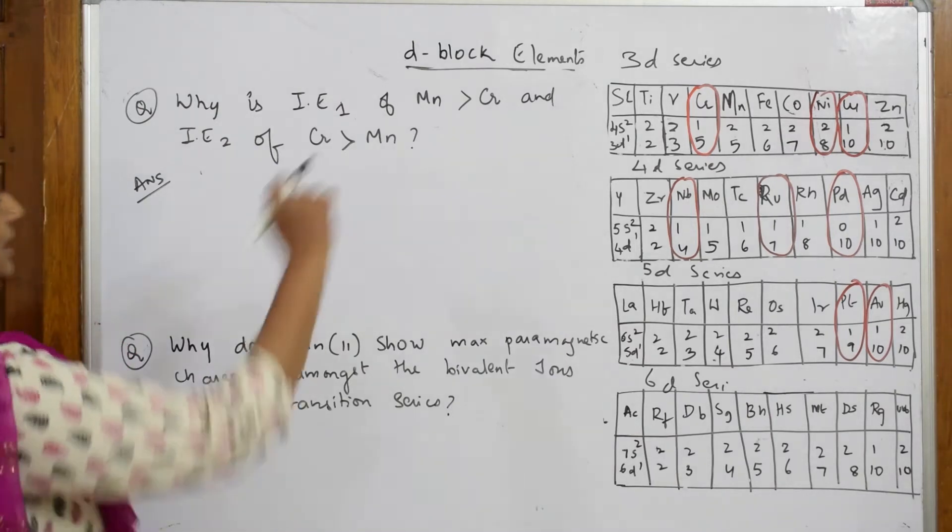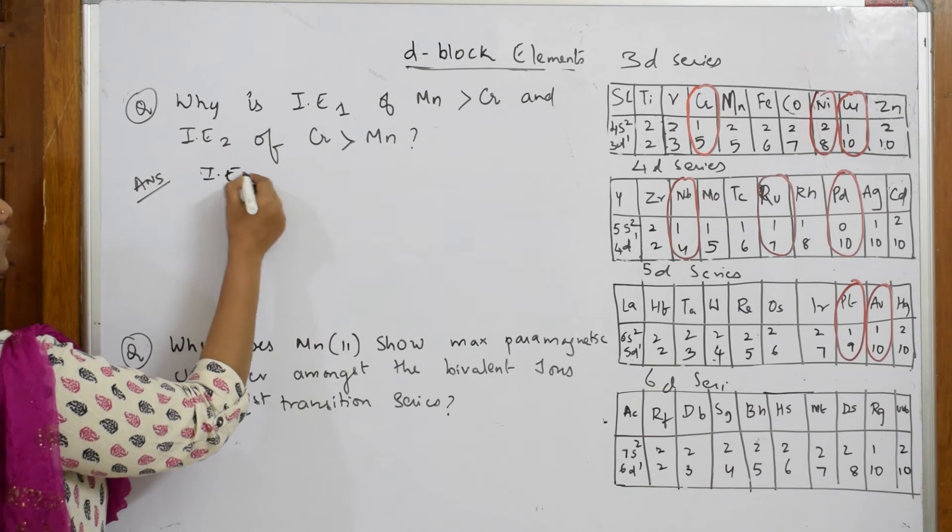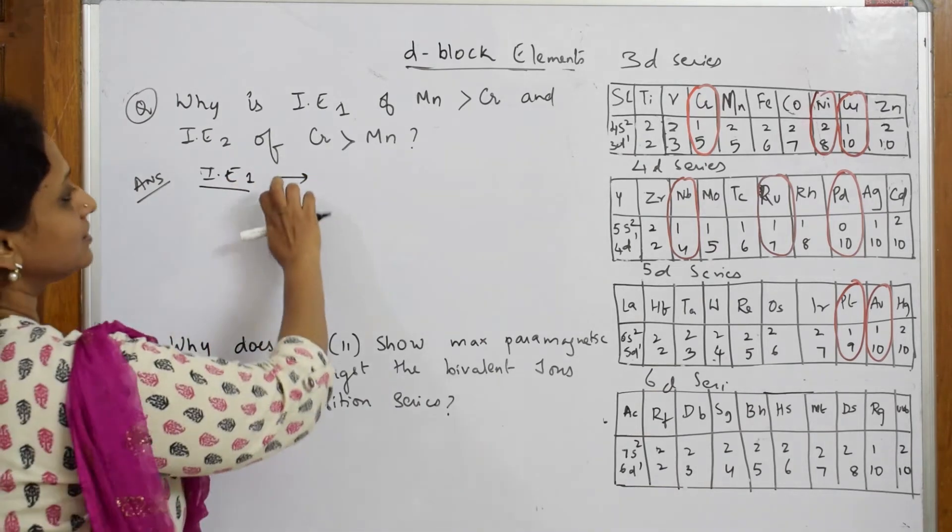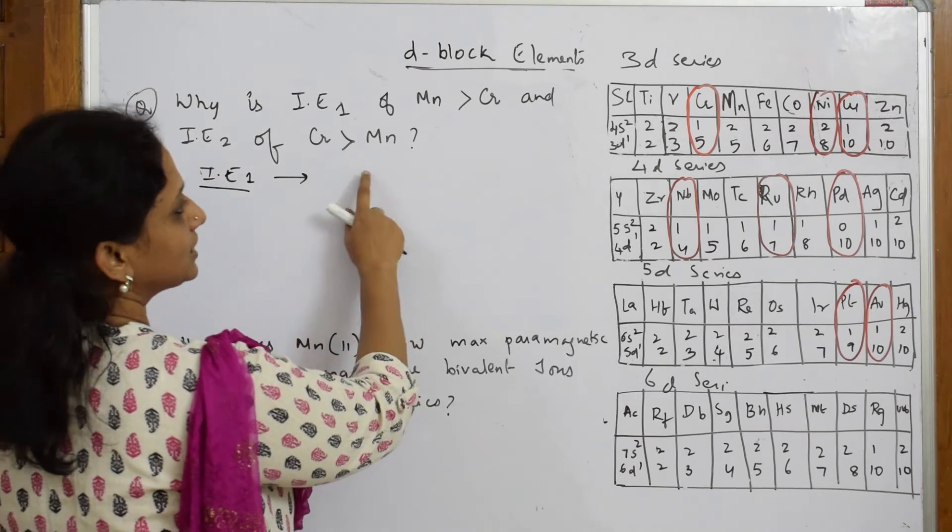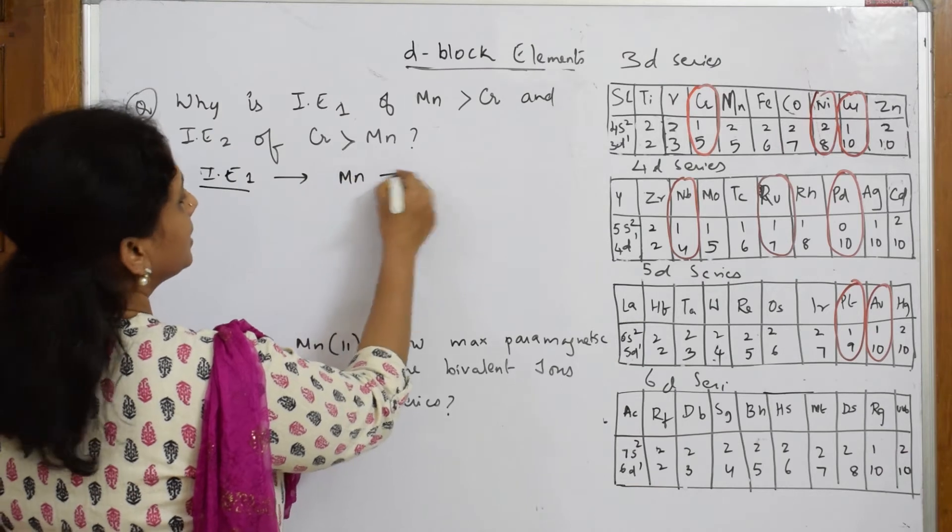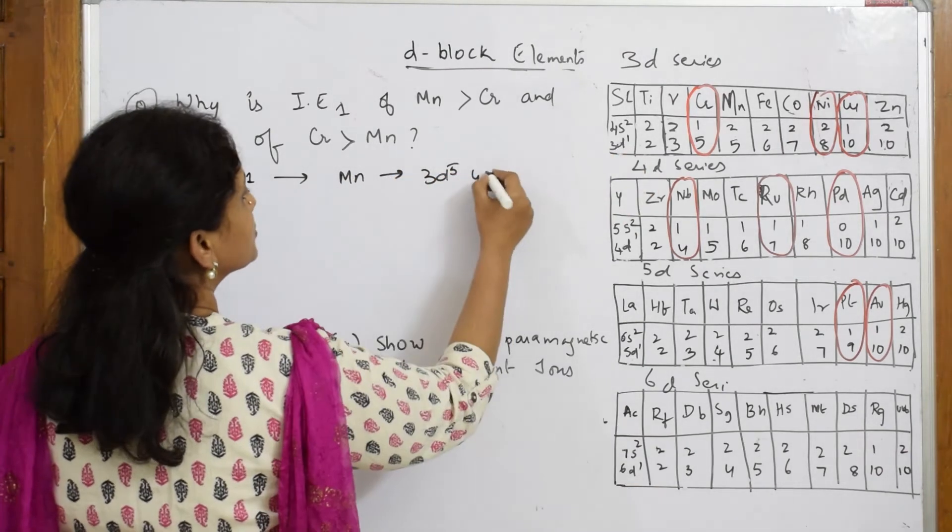Let us see. First, let us write for IE1. When I speak about IE1, I'm going to take out that electron. First, write the configuration. So Mn is 3d5 and 4s2.